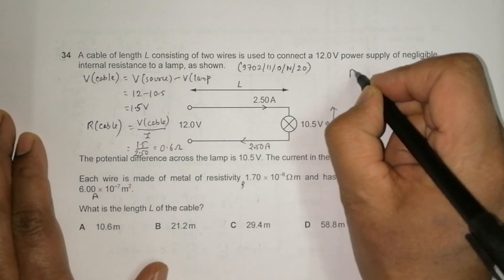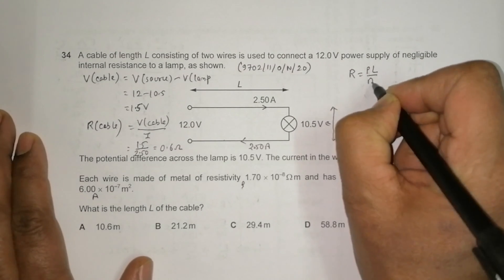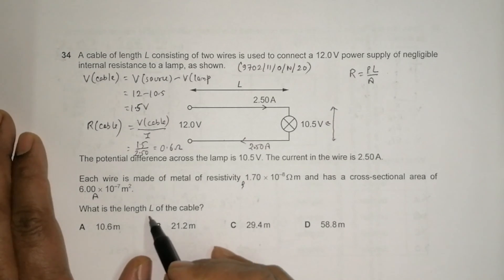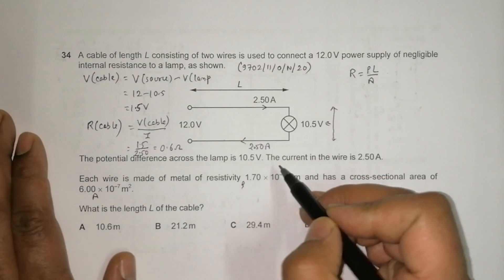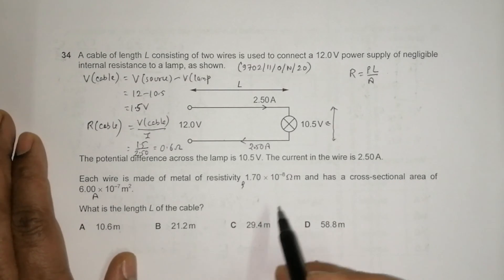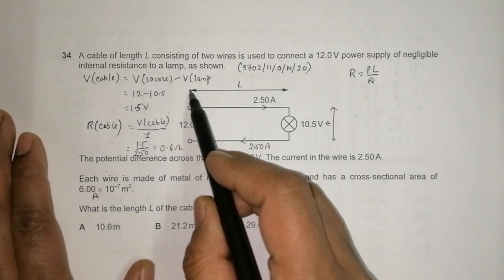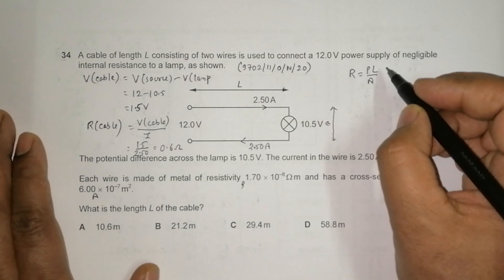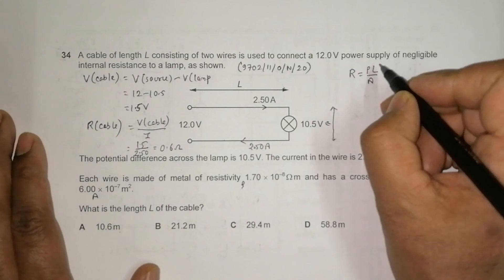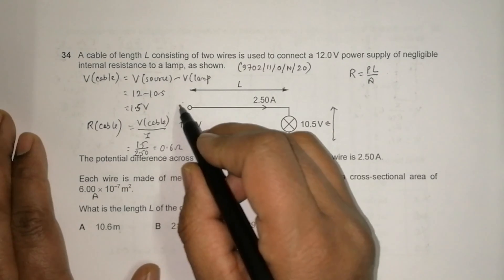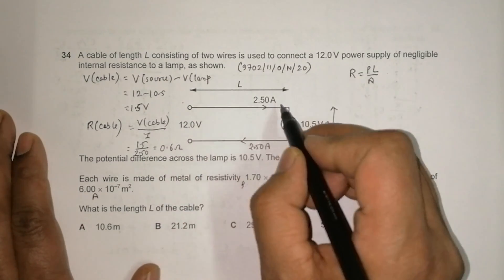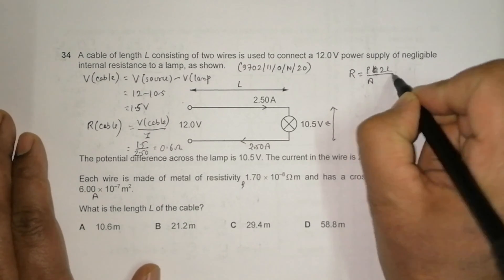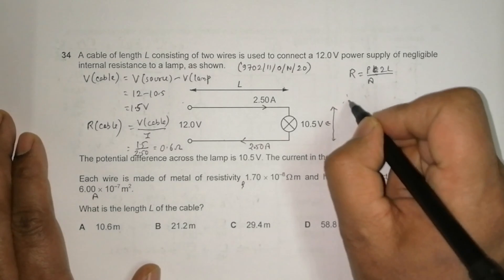We also know that R equals ρl/A. However, we need to account for the fact that the cable consists of two wires, each of length l, so the total wire length is l plus l, which is 2l. Therefore the formula becomes R = ρ(2l)/A, and rearranging gives l = RA/(2ρ).